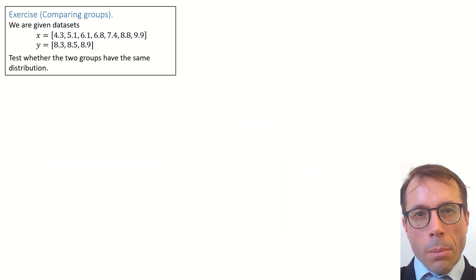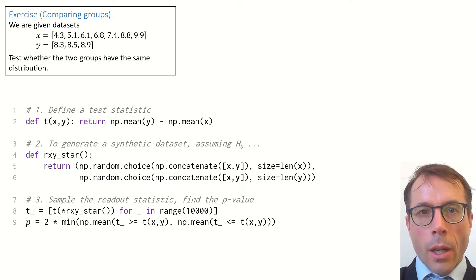Same dataset, but now we're asked to test whether the two groups have the same distribution. Here's the code. Again, steps 1 and 3 are exactly what we did before in the last video about Fisher's procedure for hypothesis testing. The only difference is step 2.